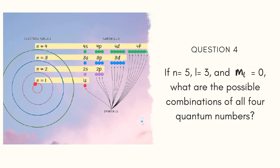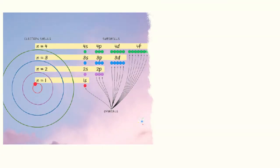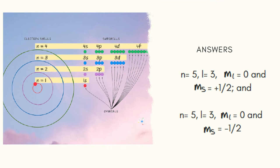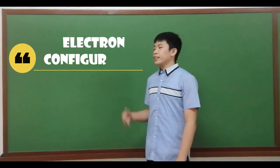Question number 4. If N is equal to 5, L is equal to 3, and M sub L is equal to 0, what are the possible combinations of all four quantum numbers? Since there are two possible values for M sub S, there are two possible combinations of quantum numbers for this set, and these are, First, we have N is equal to 5, L is equal to 3, M sub L is equal to 0, and M sub S is equal to positive 1 half. And second set would be N is equal to 5, L is equal to 3, M sub L is equal to 0, and M sub S is equal to negative 1 half.